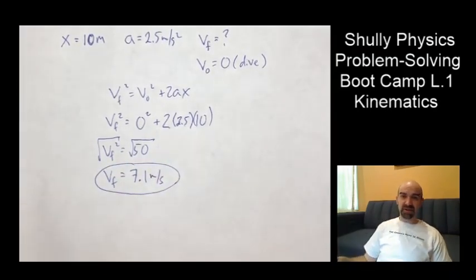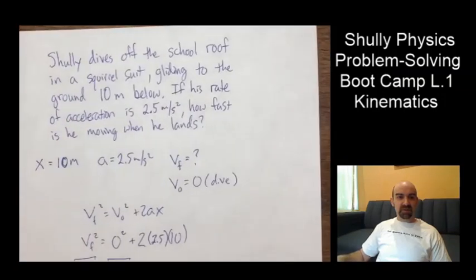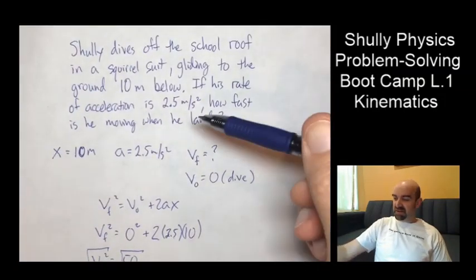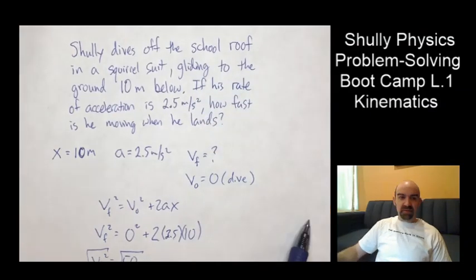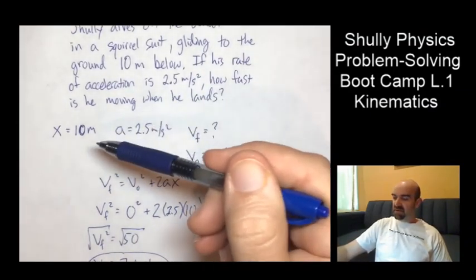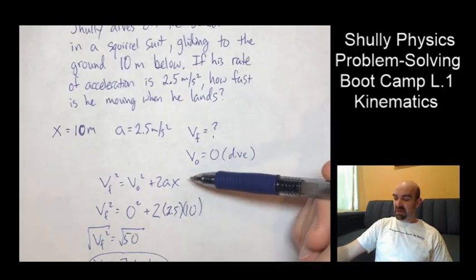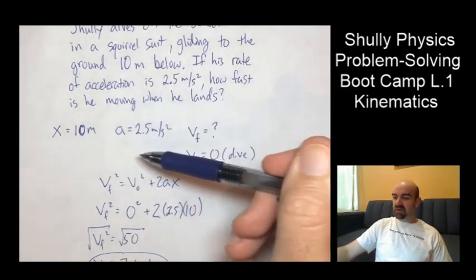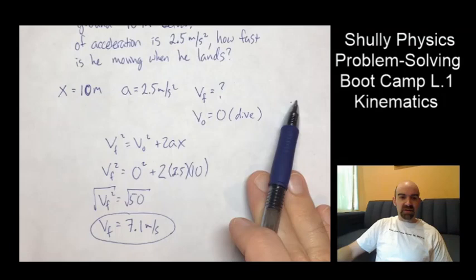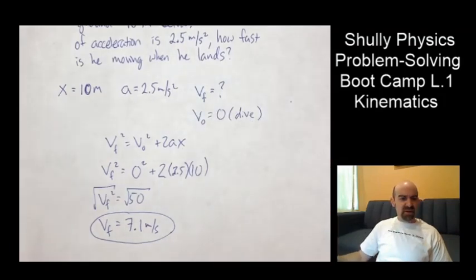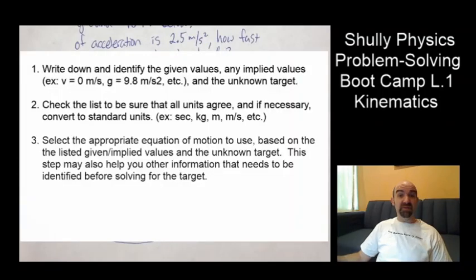Now that is still very quick. It's going to be a hard hit on the ground, but I might survive. Anyhow, that's how you do it. Problem solving bootcamp level one. We're going to identify the givens, implied, and unknown target. We're going to check our units to make sure our units agree. We're going to identify an equation that works. And then what did I do? What did I do then? Well, that's the rest of it. Pretty obvious from there. Step four is solve for the unknown target value. That's what I did there.